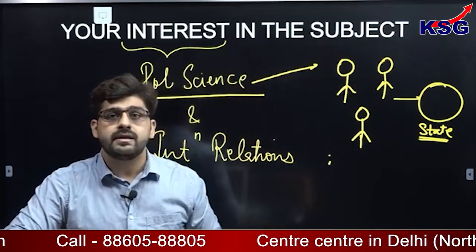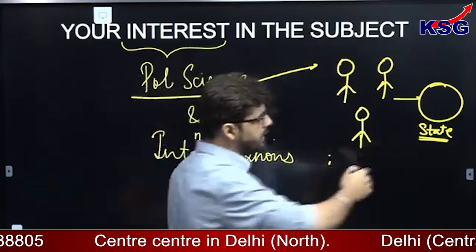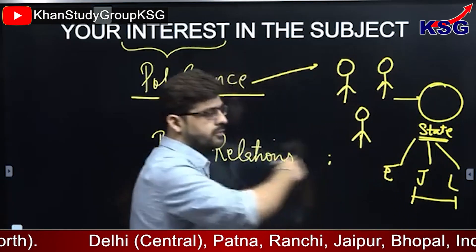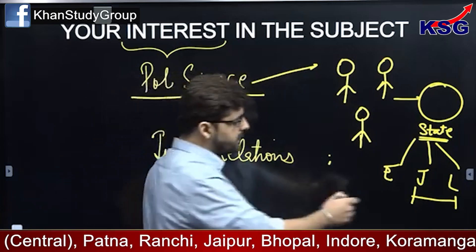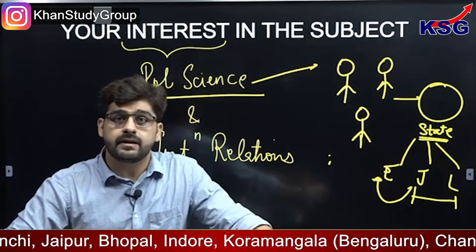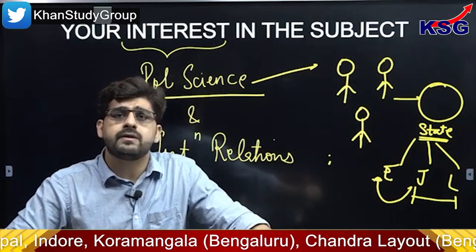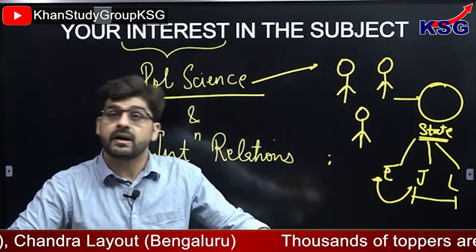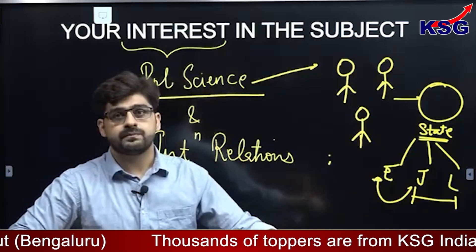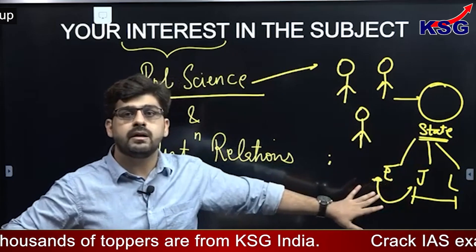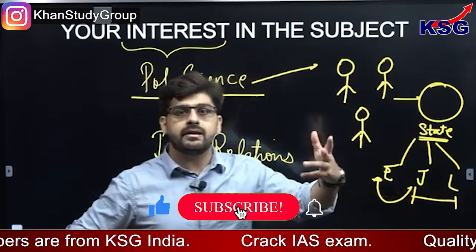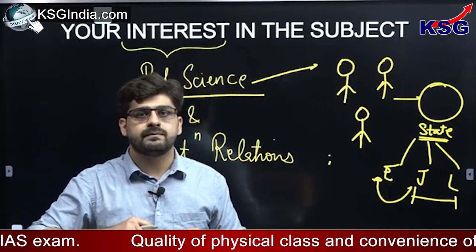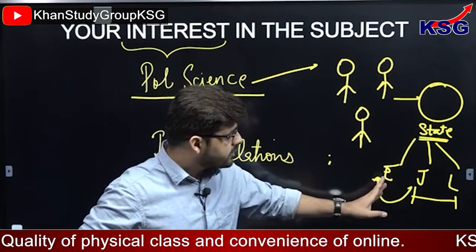Now, once the state came, how much power does it have — aab state aagahi toh uske paas powers kitni hai? There is a fight between the executive, judiciary, and the legislature. The fight between judiciary and legislature led to the origin of the doctrine of basic structure. The fight between judiciary and executive resulted in the 99th constitutional amendment — the National Judicial Appointments Commission. Judges ki niyukti executive karega. But that was held unconstitutional. So that fight is going on. The executive has been given the power to administer laws, the legislature to make laws, the judiciary to adjudicate on disputes. But their respective jurisdictions remain contested.